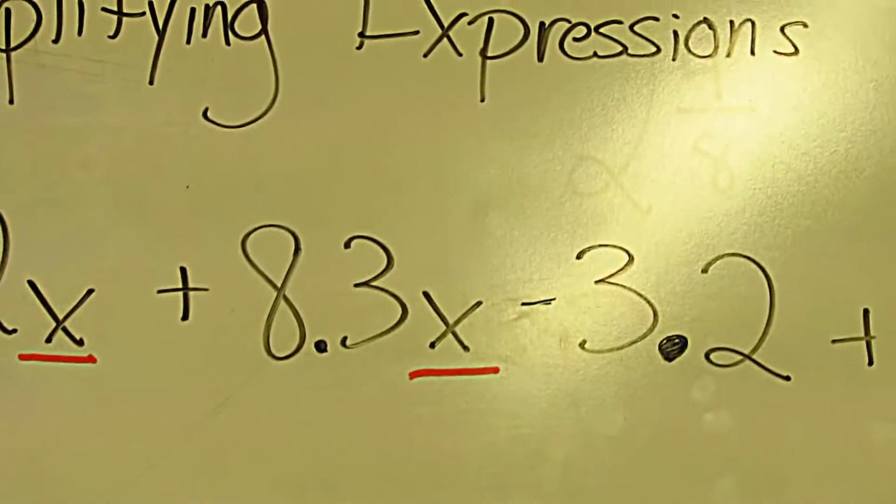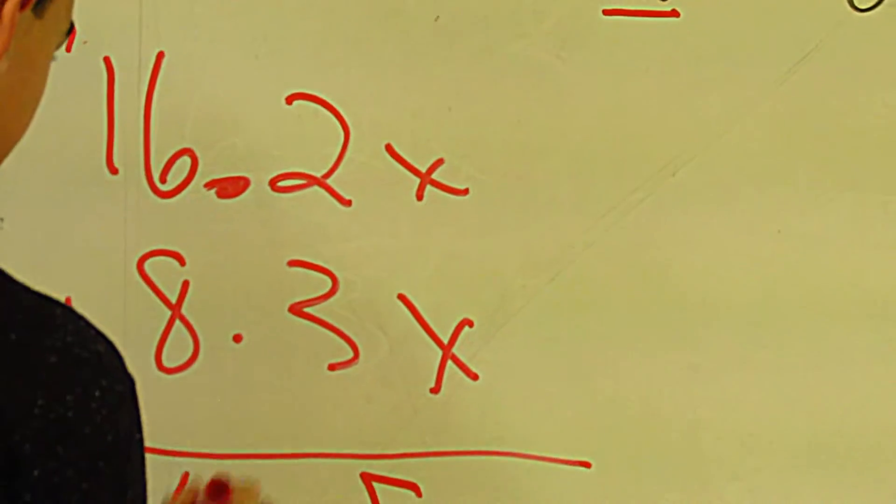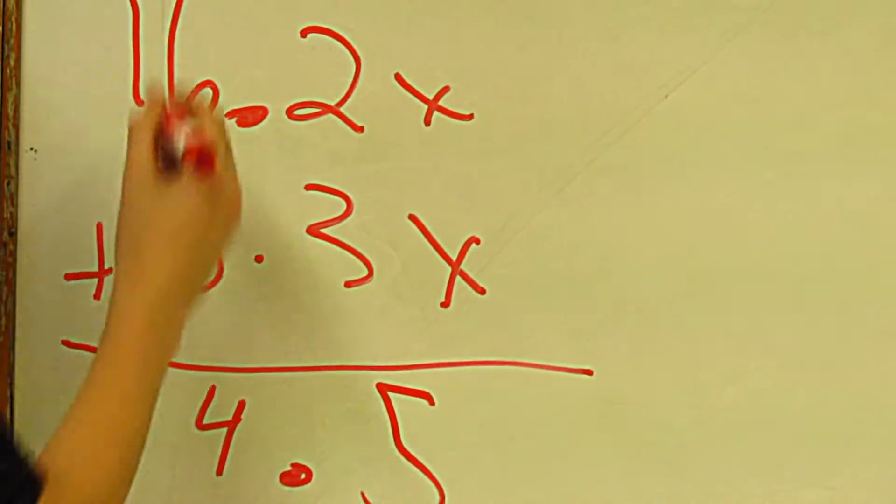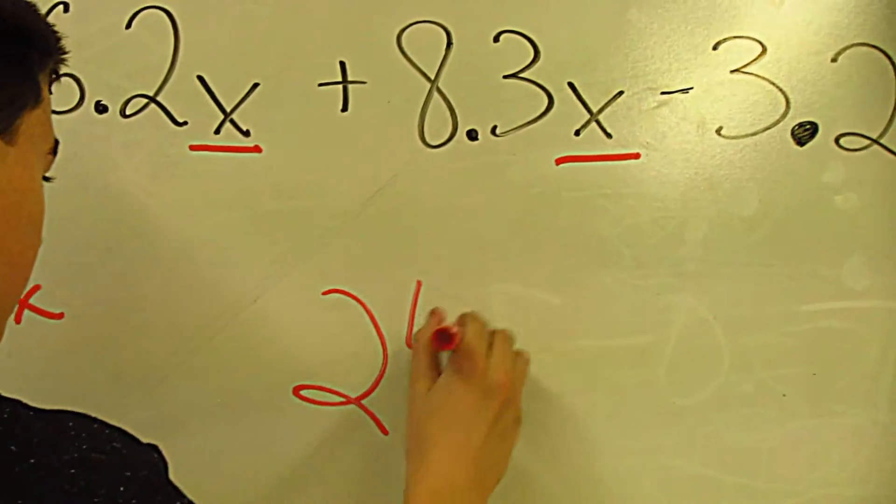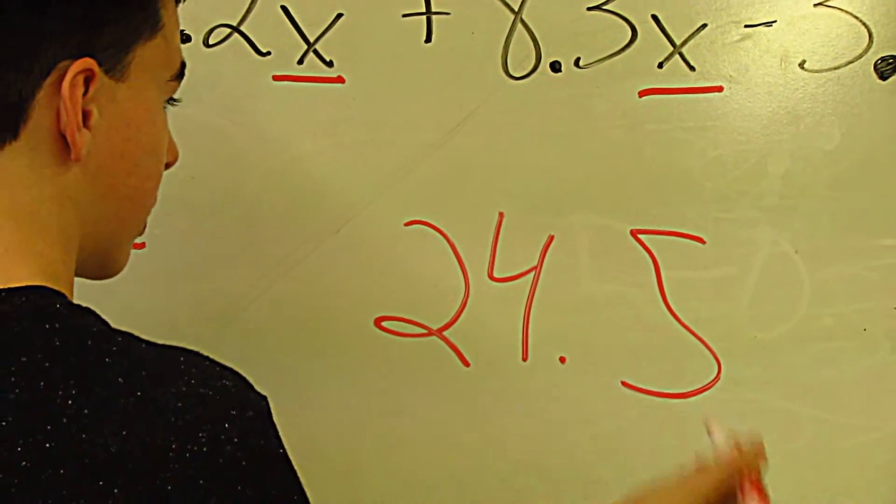2 plus 3 is 5, 8 plus 6 is 14, bring down the decimal, and 1 plus 1 is 2. So 24.5x.